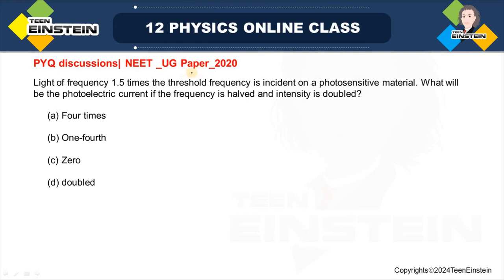Hello students, welcome to the POIQ discussions on NEET UG papers. Here, I'm going to discuss a problem from NEET UG paper 2020. The problem says: Light of frequency 1.5 times the threshold frequency is incident on a photosensitive material. What will be the photoelectric current if the frequency is halved and intensity is doubled?